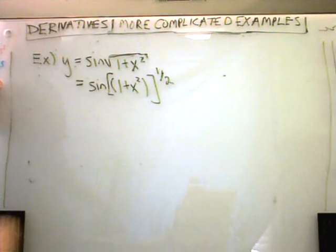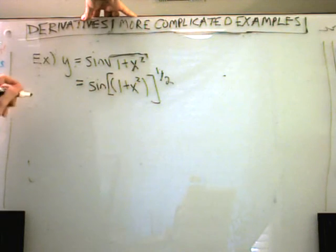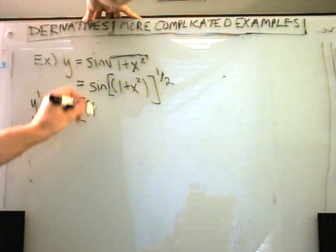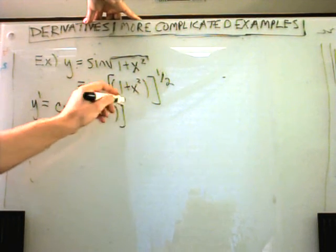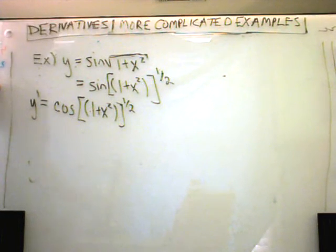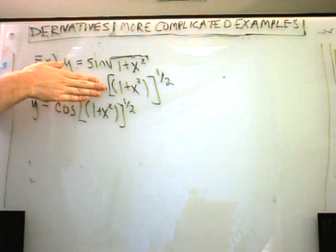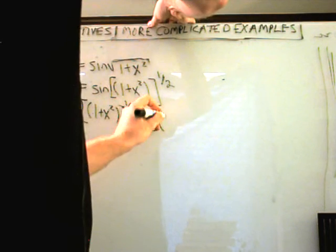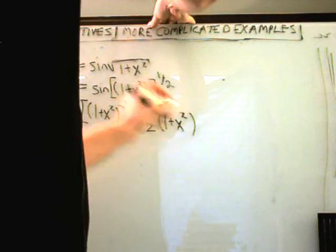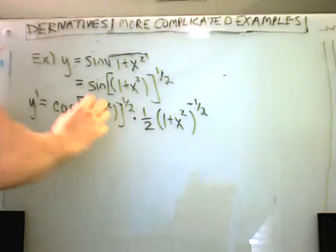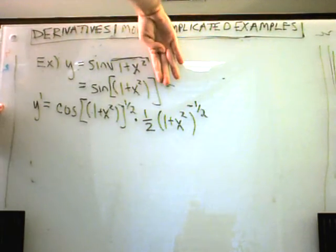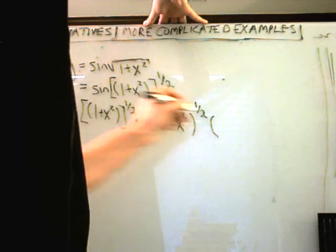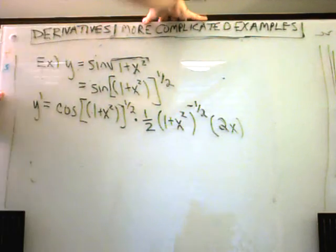Unlike the last example, the outermost thing is not the one-half — it's the sine. So when I take my derivative, the derivative of sine is cosine, and I leave all of this alone: one plus x squared raised to the one-half power. Now I move a little more inside. In my head I forget about the sine and think: if this were my function what would I do? The one-half comes out front, I leave the inside alone, and take one away to get to the negative one-half power. I've handled the sine part and the one-half part, but I still have to multiply by the derivative of one plus x squared. The derivative of 1 is zero and the derivative of x squared is 2x.